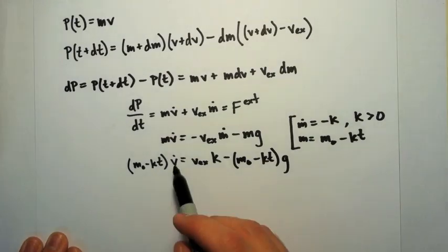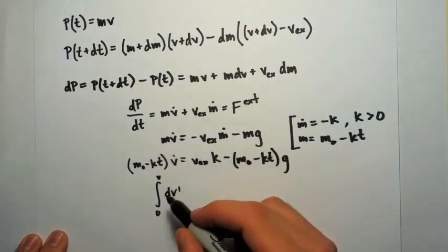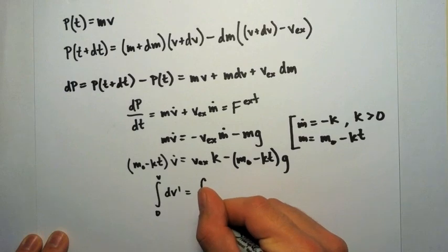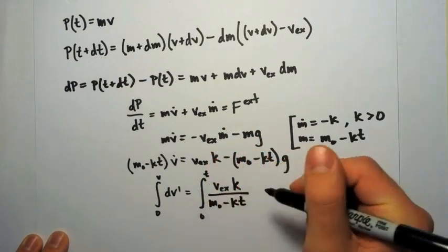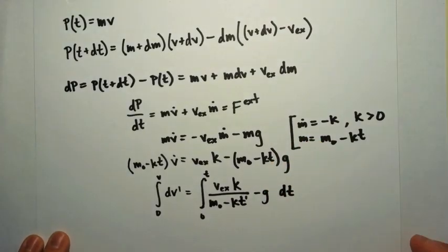So making those substitutions and rearranging, we're then going to divide by m naught minus kt, then separate variables, and on the left integrate with respect to v, and on the right integrate with respect to t.